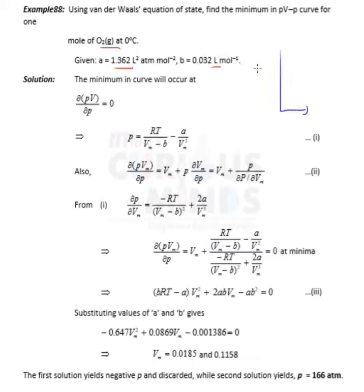We have this curve with PV and P axes. We need to find the minimum of this PV-P curve for 1 mole of O₂ at a certain temperature. For this you should know the van der Waals equation.